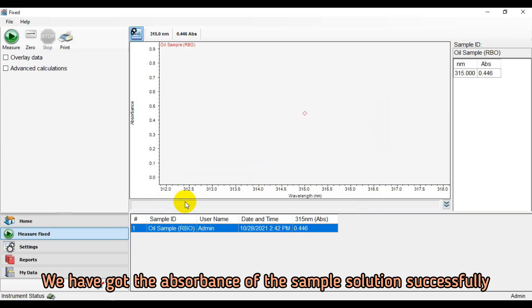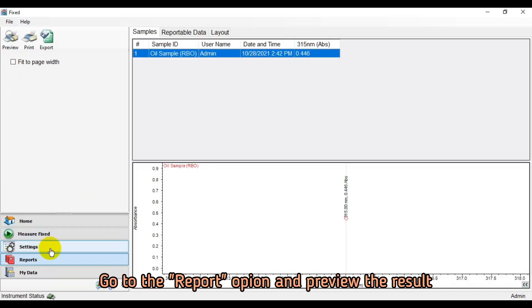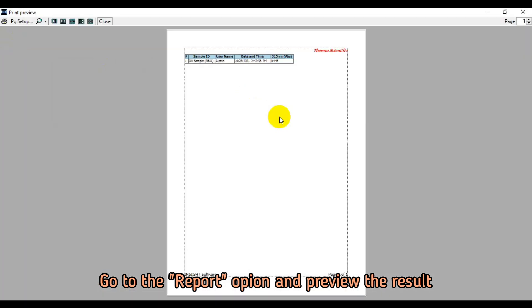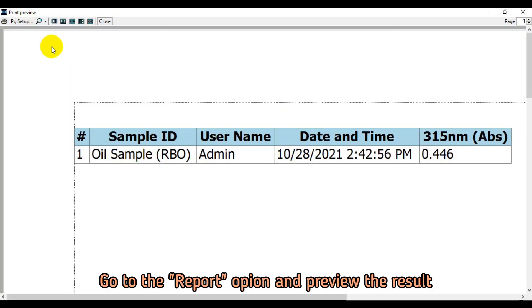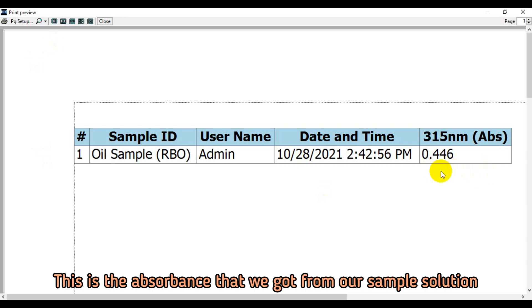We have got the absorbance of the sample solution successfully. The absorbance values recorded must lie within the range 0.3 to 0.6. If not, the measurements must be repeated using more concentrated or more diluted solutions as appropriate. Note the absorbance.